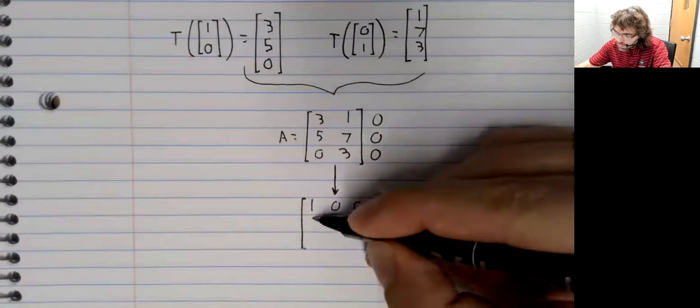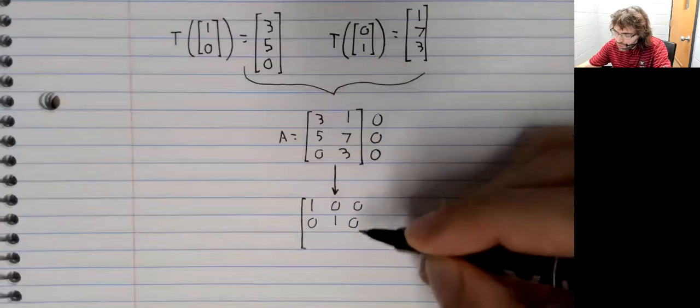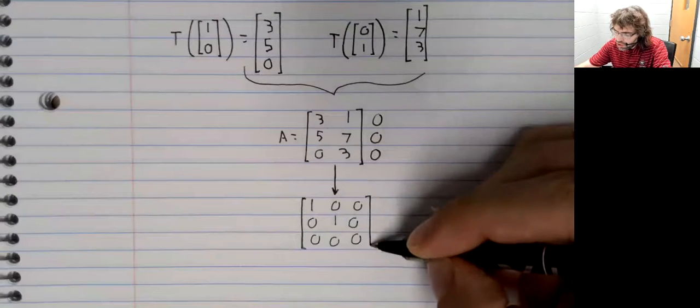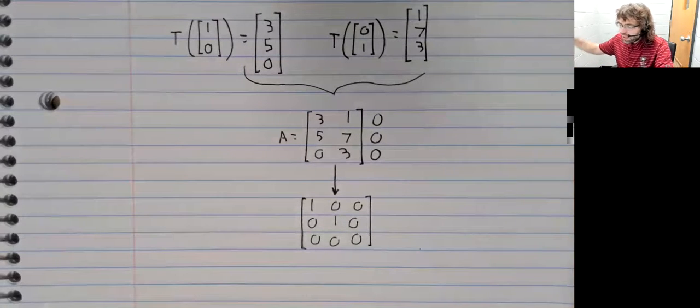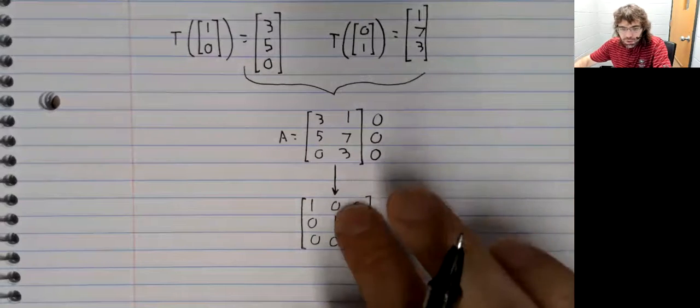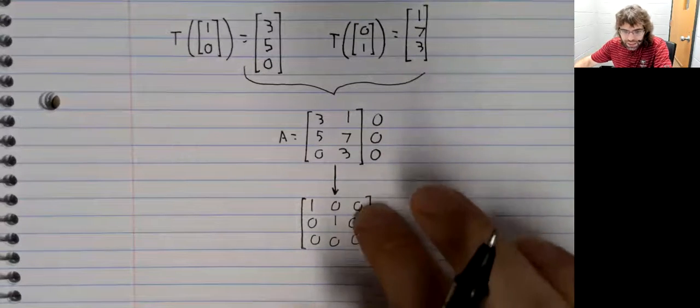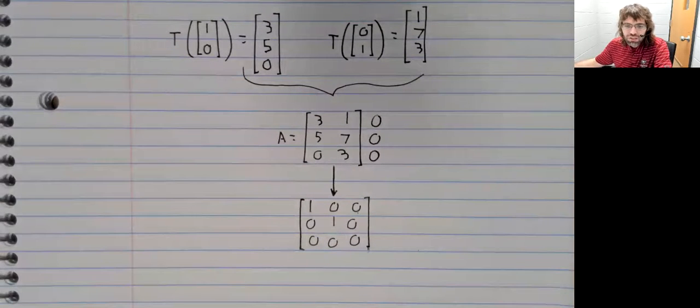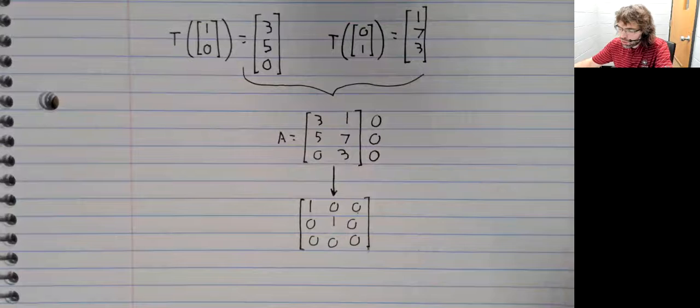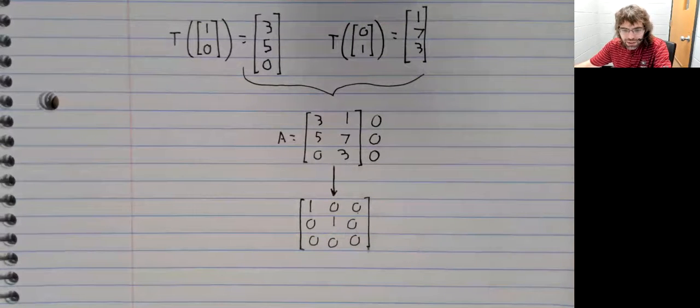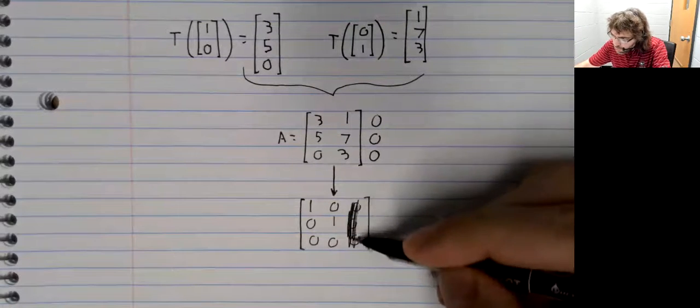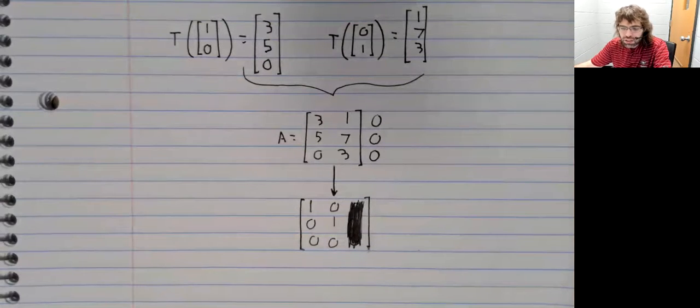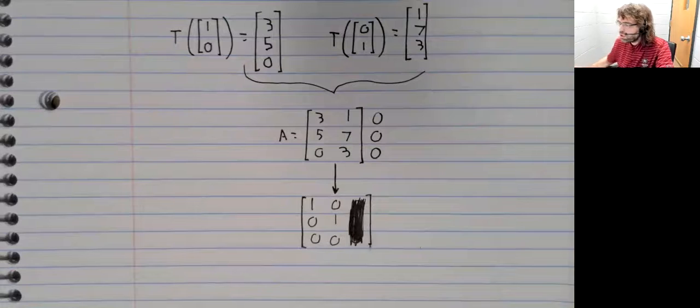our calculator will perform the elimination for us. And now remember, this last column doesn't have any meaning. It was only added to get around this ridiculous problem our calculator has. So once we've performed the elimination, we'll get rid of it again. So here we are.